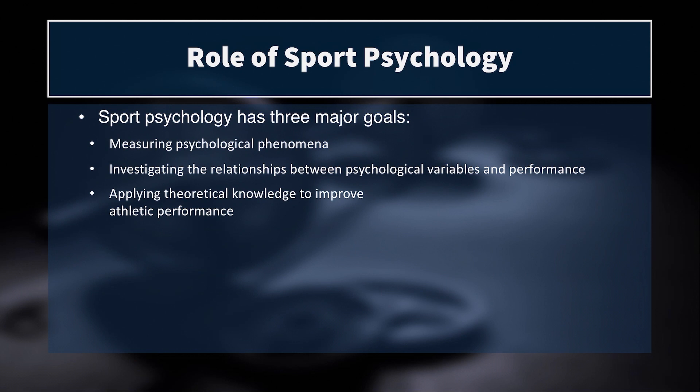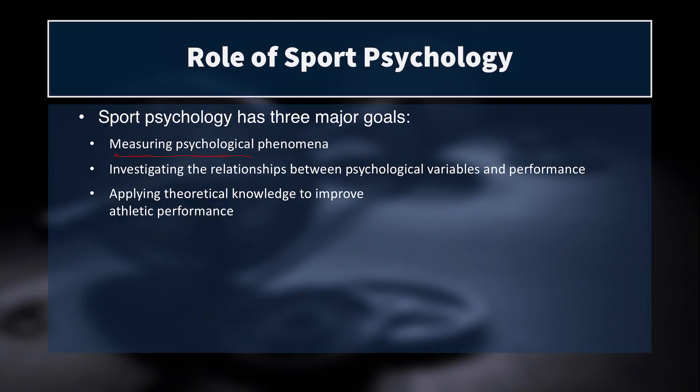Within athletics and performance and training, sports psychology has three major goals. The first goal is to measure psychological phenomena — if you can't measure it, you can't quantify or assess it. It's not going to do you any good to have theories or terms that we're defining if we can't actually measure the things we're talking about. The second goal is to investigate the relationships between psychological and performance variables — what good does it do to track stress or levels of arousal if we don't know how those relate to performance?